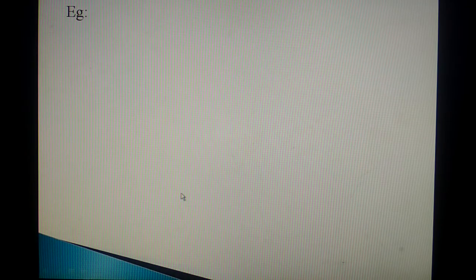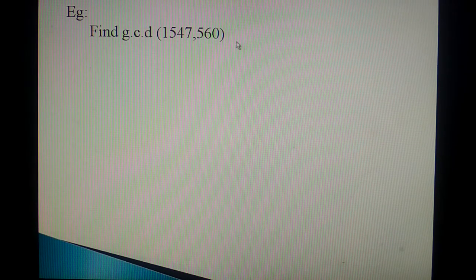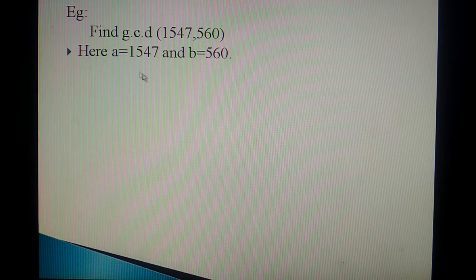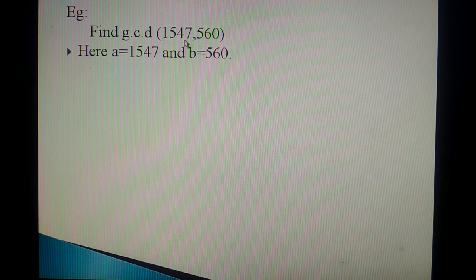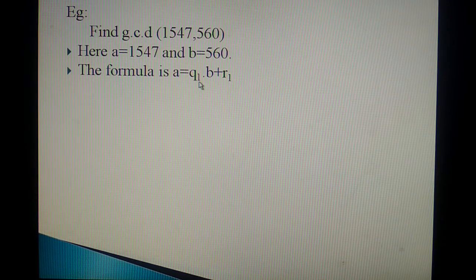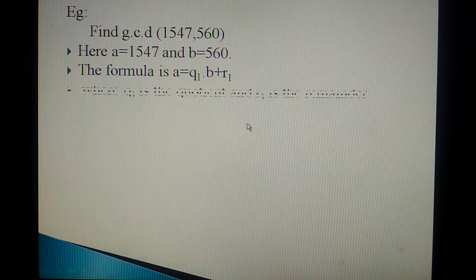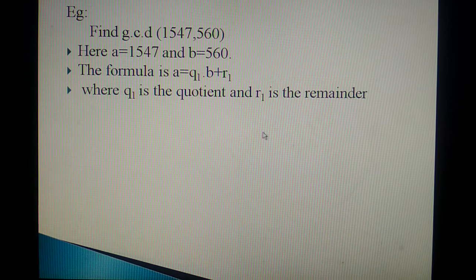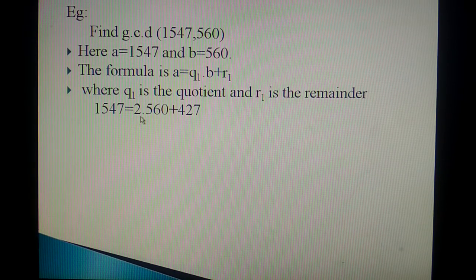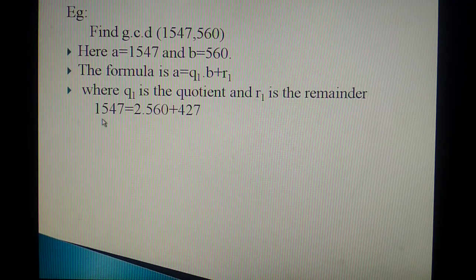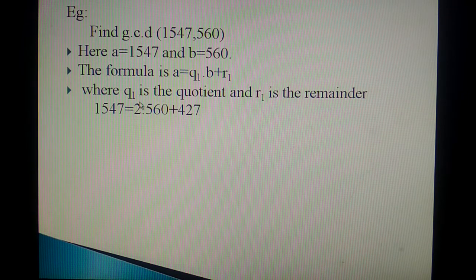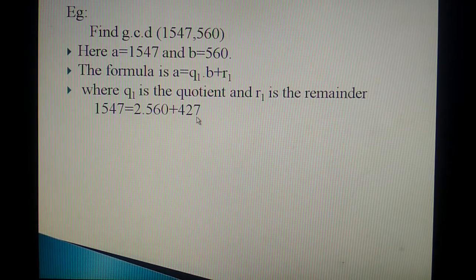Now let us discuss one problem. How to find the GCD of 1547 and 560? Here A is 1547 and B is 560. The formula is A is equal to Q1 quotient into B plus remainder R1. Where Q1 is the quotient and R1 is the remainder. In the place of A substitute 1547 is equal to B, 560. When you divide 1547 by 560, you will be getting the quotient as 2 and the remainder is 427.